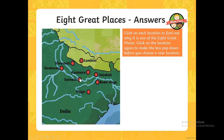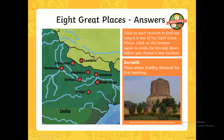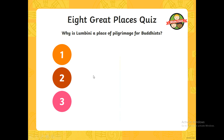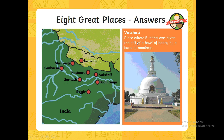We've got Sarnath as one of the eight great places, which is where Buddha delivered his first teaching. We know that Buddha did a lot of teachings to his followers, and this is where he completed his first one, so that might be an important place. Then there's Vaishali — a place where Buddha was given the gift of a bowl of honey by a band of monkeys, one of the big stories in Buddhism. So when he received a bowl of honey from a band of monkeys — sounds pretty crazy!